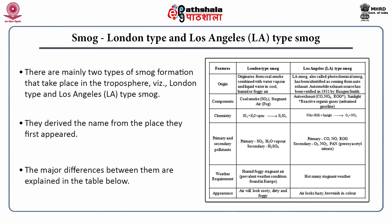The chemistry of London type smog: SO₂ + H₂O vapor produces H₂SO₄. In Los Angeles type smog, NOx + reactive organic gases in the presence of sunlight produces ozone + NO₂. In London type smog, the primary pollutants are SO₂ and water vapor, and the secondary pollutant is H₂SO₄. In LA smog, primary pollutants are CO, NOx and ROG, while secondary pollutants are ozone, NO₂ and PAN (peroxyalkyl nitrate, especially peroxyacetyl nitrate). London smog requires humid, foggy, stagnant air, while LA smog occurs in hot, sunny, stagnant weather. London smog appears sooty, dirty and foggy; LA smog looks hazy and brownish.